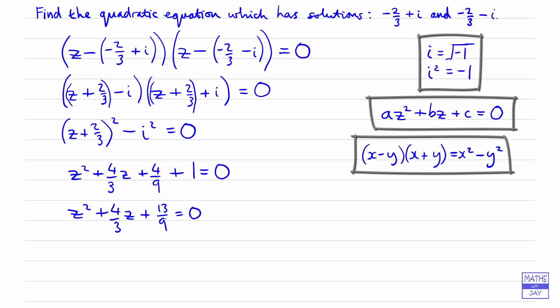And then although we could say well yes that's a quadratic, I think it would be nicer if we had whole numbers multiplying each of the terms. So let's multiply through by nine. So that will give us nine z squared plus, and then nine divided by three, three times four is twelve, so we've got twelve z in there, and then nine times thirteen-ninths will be thirteen, and that's equal to zero.